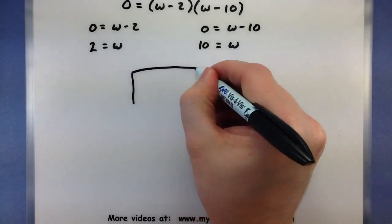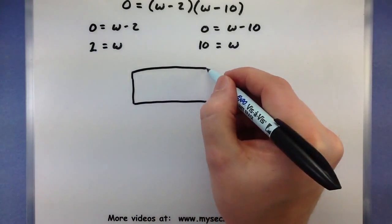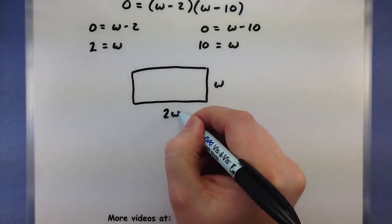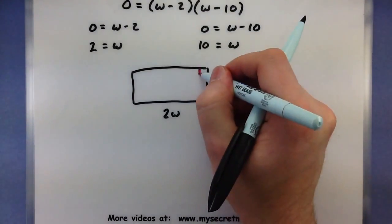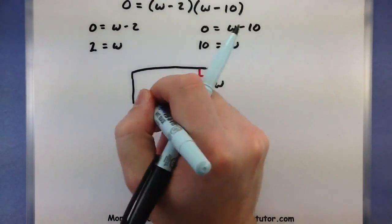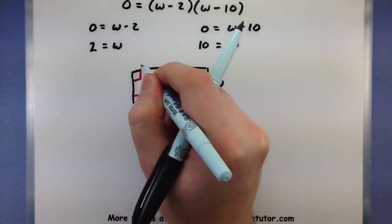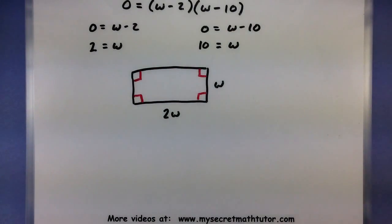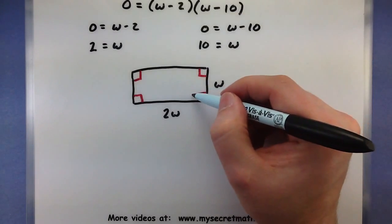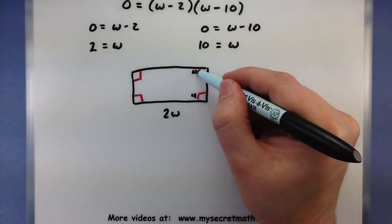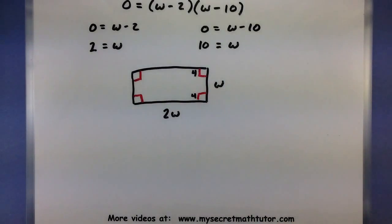To see this, go all the way back and remember what that piece of cardboard looks like. So this will be W, and this will be 2W. We're looking to cut 4 inch squares, or 4 centimeter squares, out of each side. Now, if the width of my cardboard is only 2 centimeters, then I won't have enough cardboard to cut a total of 8 centimeters away from it. So there's no way that I could have a width of 2 centimeters. It's just not enough cardboard.